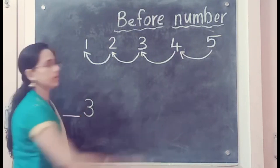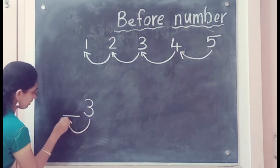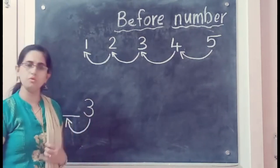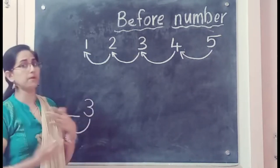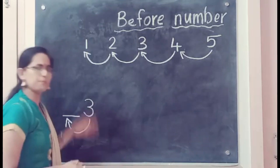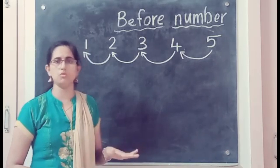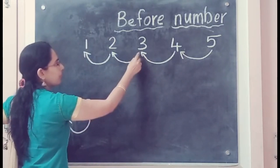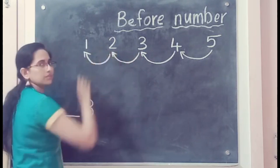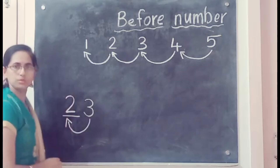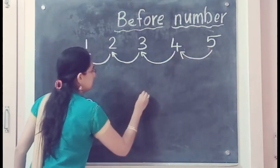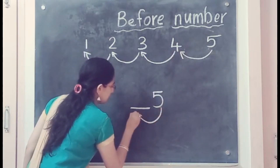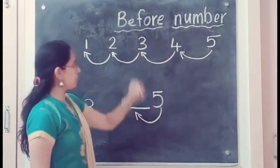So in the arrow — 2, 1. The answer is 2. Now number 5 — what comes before 5? In the arrow. Practice 5 times, 10 times — in the day, same practice. Now, in the arrow.